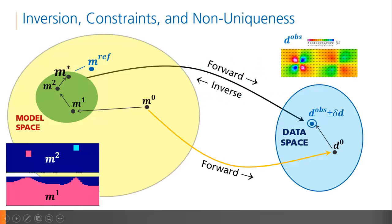The inverse problem starts with an observation in the data space, which can be caused by infinitely many models. One such example is the observed gravity gradient data here that could have been a response to either of these two models. The solution to the inverse problem, then, is non-unique.